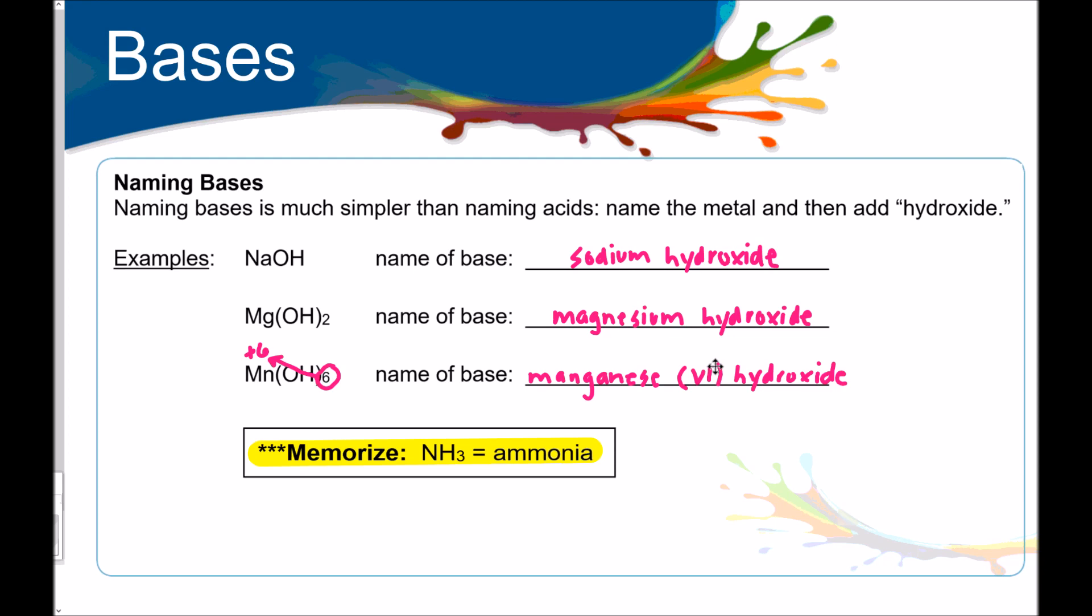And lastly, you need to memorize ammonia, NH3, and to know that it is a base. It is not a molecular compound, even though it's made up of two nonmetals. It is a base. NH4 plus is ammonium. Do not get that confused with ammonia, the base. This concludes our video for today over ternary ionic compounds, including bases. Move on to your practice and ask your teacher if you need any help. Have a good day.